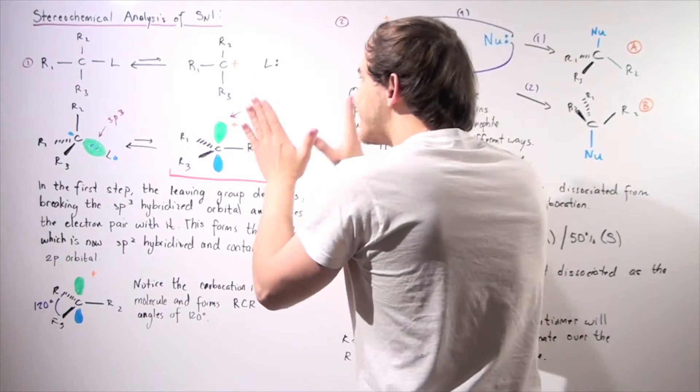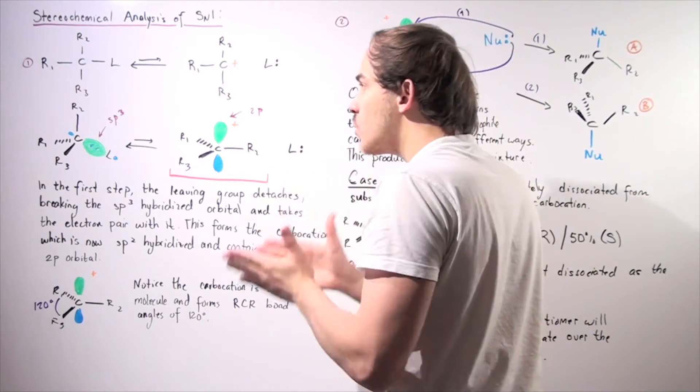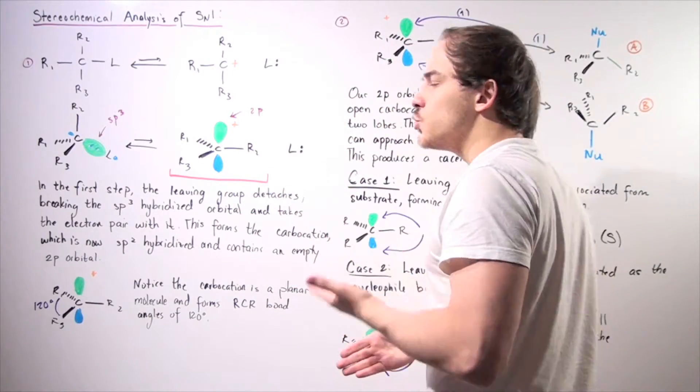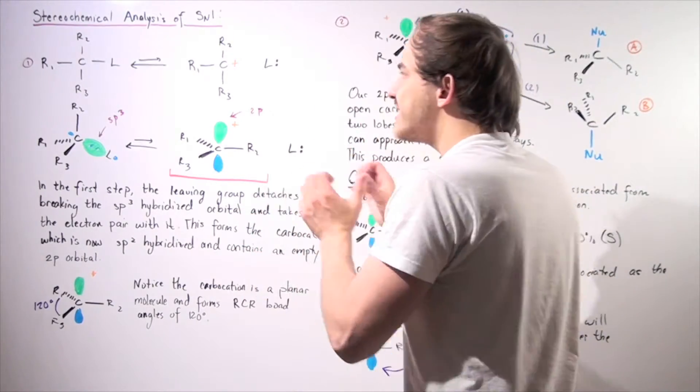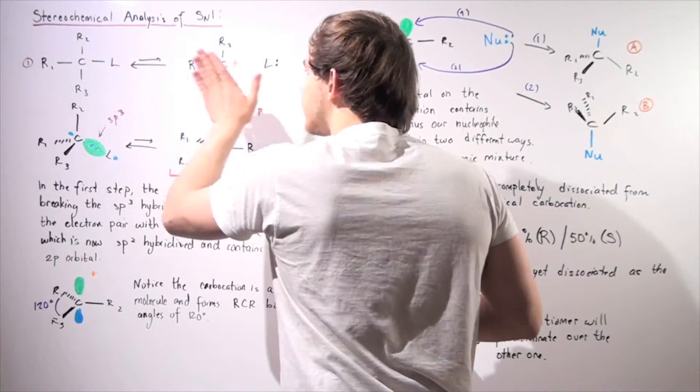And these two negatively charged intermediates are stabilized by our protic polar solvent, which is usually water. So let's examine our orbital diagram for the reactants and products.